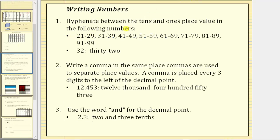Number one, we hyphenate between the tens and the ones place value in the following numbers: 21 through 29, 31 through 39, all the way through 91 through 99. As an example, we write 32 as thirty-two.